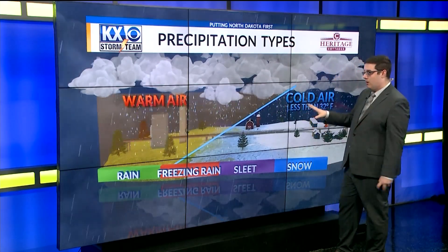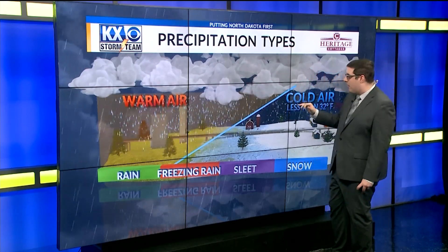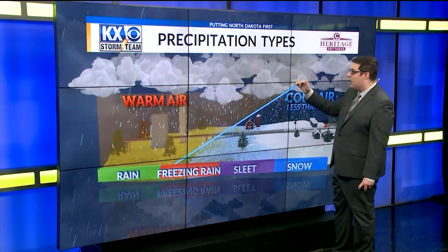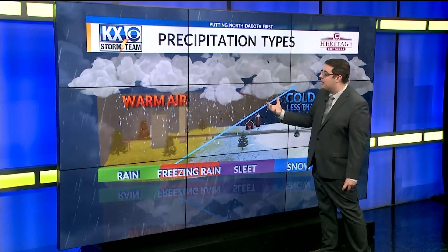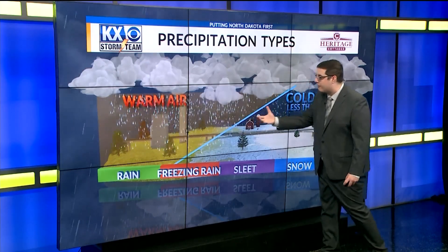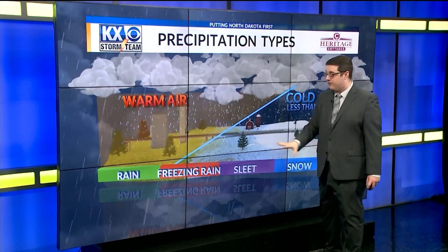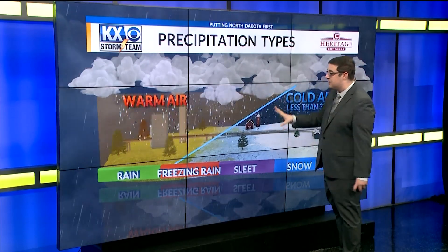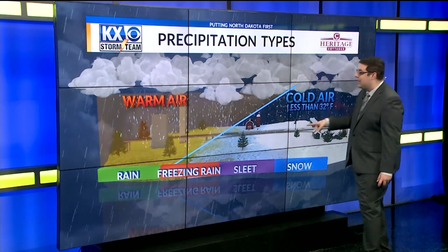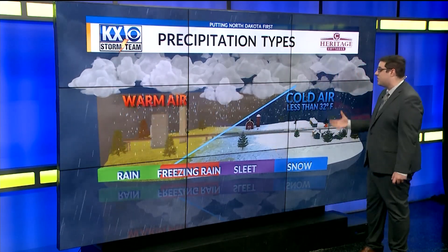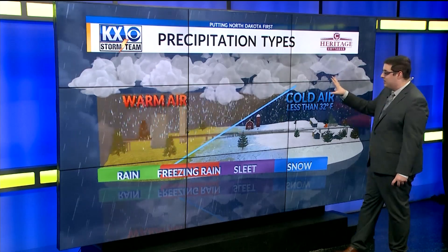With sleet, there will be a smaller layer of warmer air above that freezing mark. Rain will fall through that warm layer but then drop below the freezing layer. Not all of that rain will freeze as it falls to the ground, but some of it will, giving us sleet.